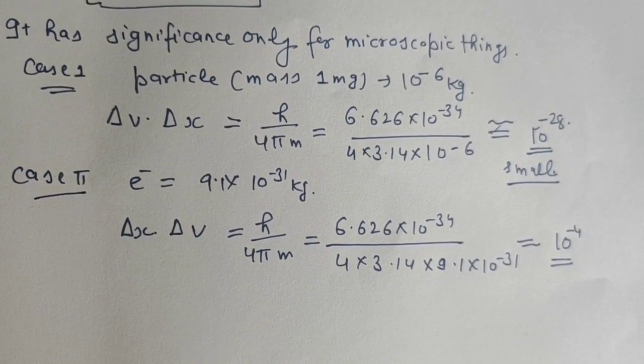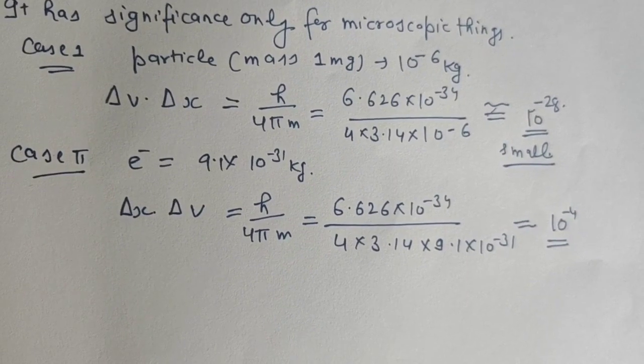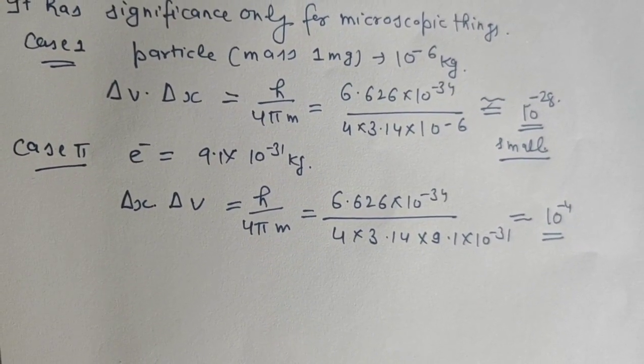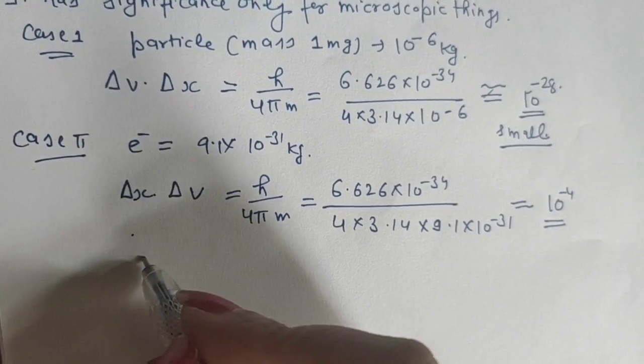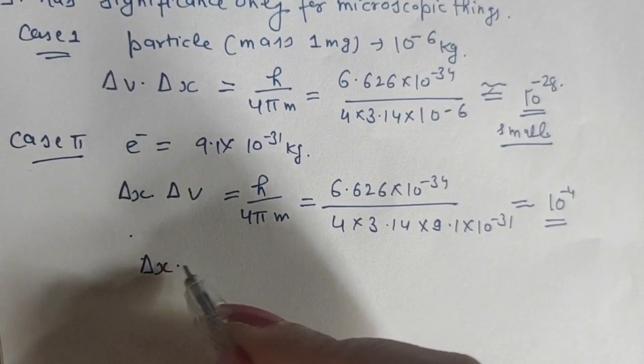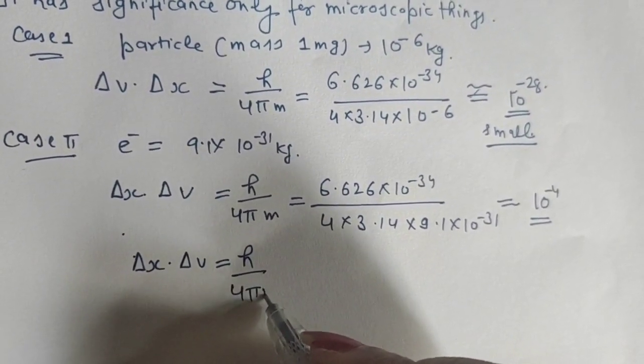Therefore, Heisenberg's Uncertainty Principle has significance only for microscopic things. With this formula's help, we will solve a problem: Δx·Δv = h/4πm.